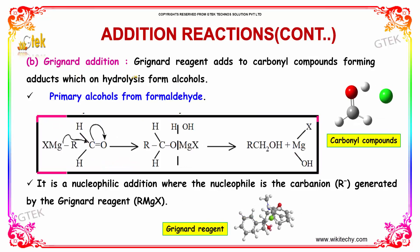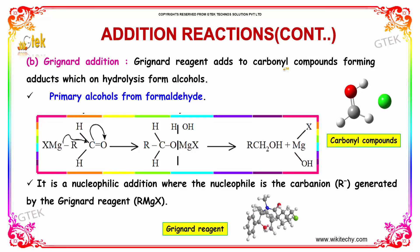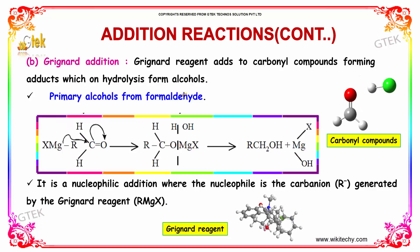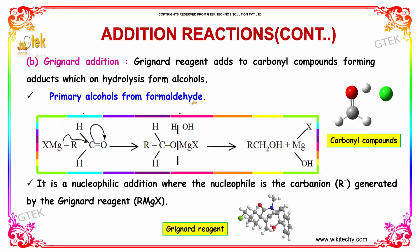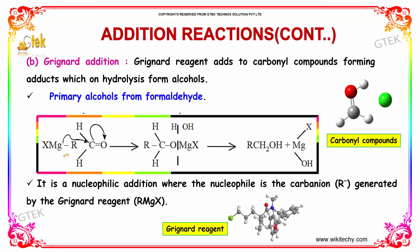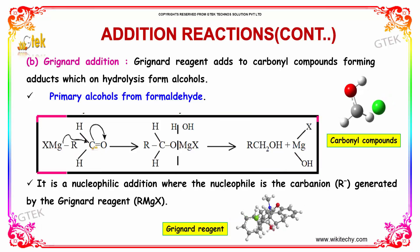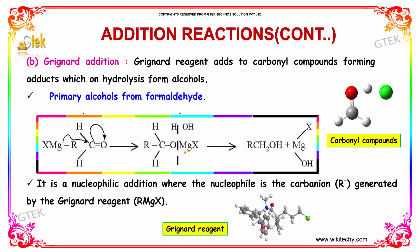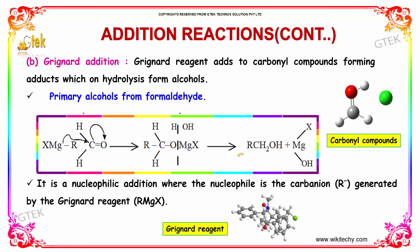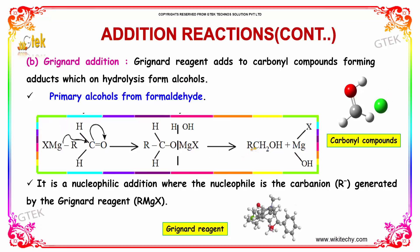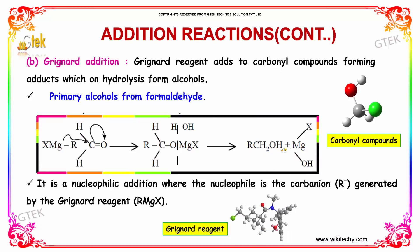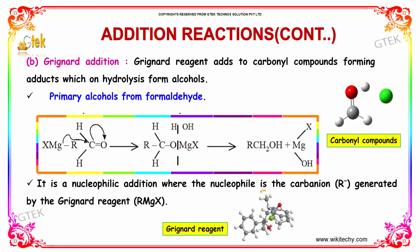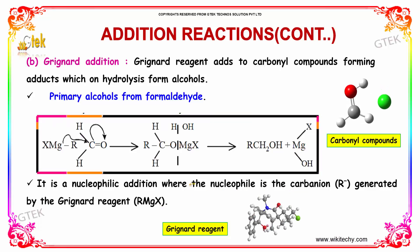The second method is using Grignard reagent. Grignard reagent adds to carbonyl compounds forming an adduct which on hydrolysis forms alcohols. Primary alcohols form from formaldehydes. RMgX reacts with C=O to form RCHO and MgX, which on further reaction with water results in the formation of RCH2OH plus MgOHX. It is a nucleophilic addition where the nucleophile is the carbanion generated by the Grignard reagent RMgX.